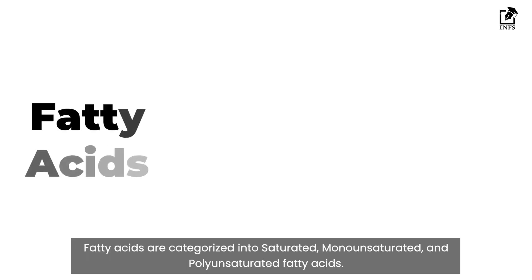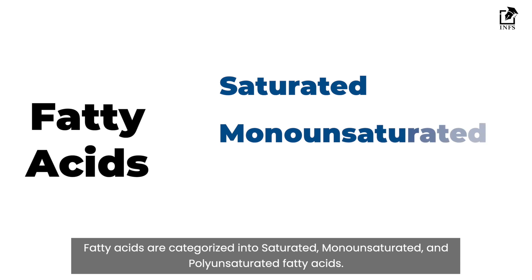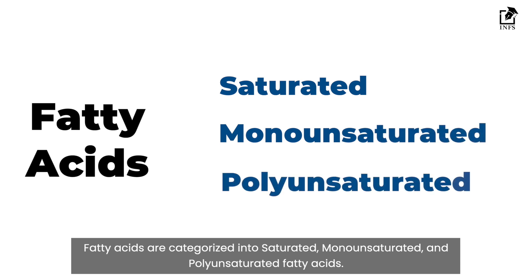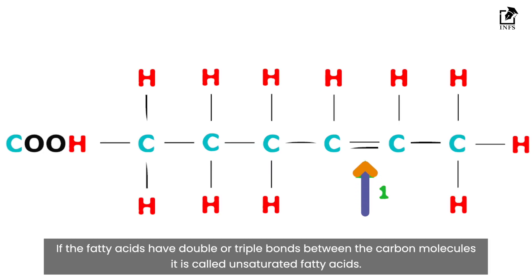Fatty acids are categorized into saturated, monounsaturated, and polyunsaturated fatty acids. If all bonds between the carbon molecules in a fatty acid are single bonds, they are called saturated fatty acids. If the fatty acids have double or triple bonds between the carbon molecules, they are called unsaturated fatty acids.